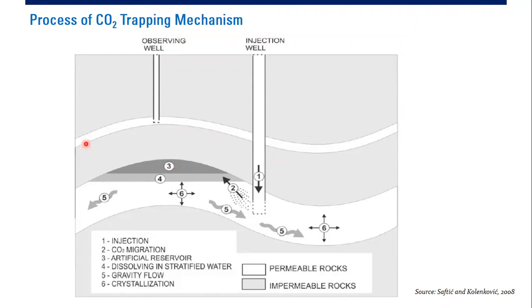We have the picture here. We have an injection well from which we will inject the CO2, and we can also have the observation well to monitor whether or not there is CO2 leak flow from the reservoir to, let's say due to some leakage, another zone. Then we can confirm using this observation well.